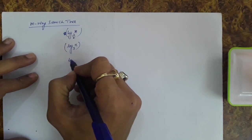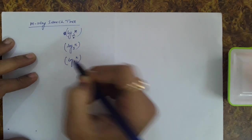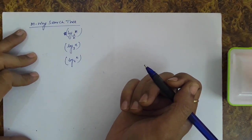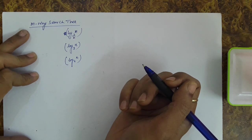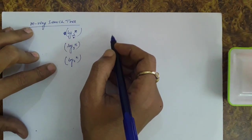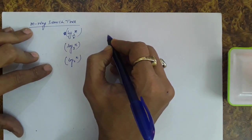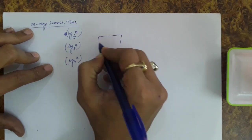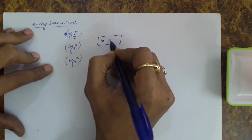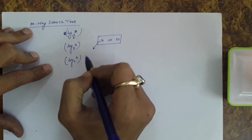If we have four ways to find it, then it will be log n to the base 4. So the m-way search tree is a kind of search tree in which there are m ways to go from a particular node. For example, if I have a node which is having the keys 10, 20, and 30, then there are four ways I can go.